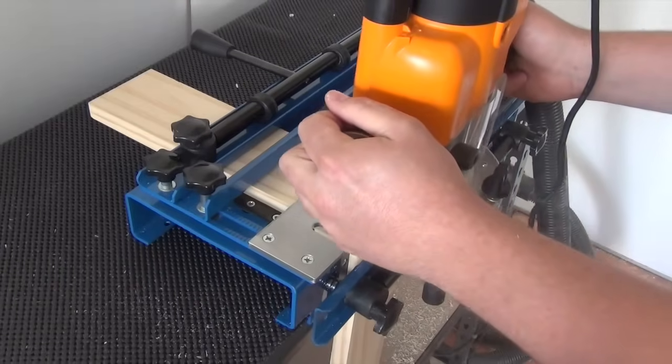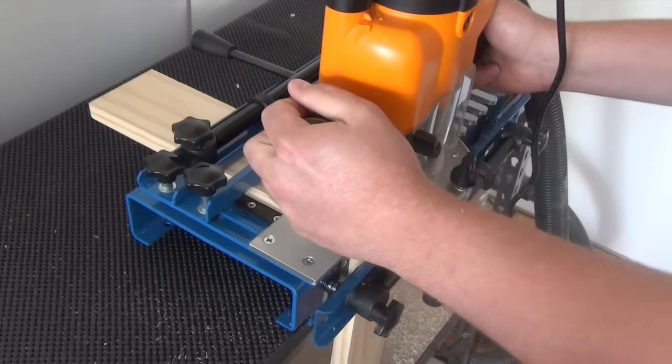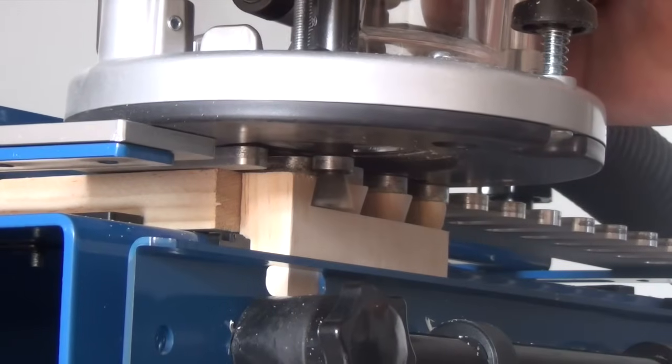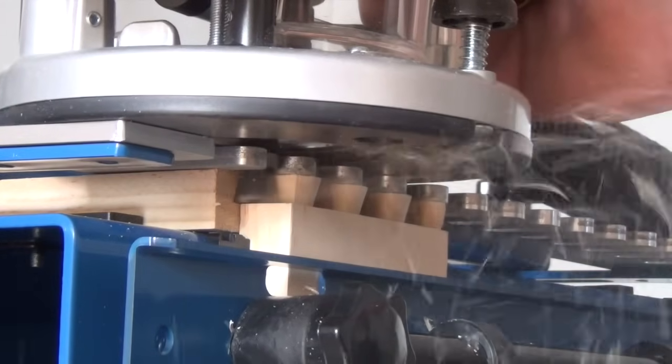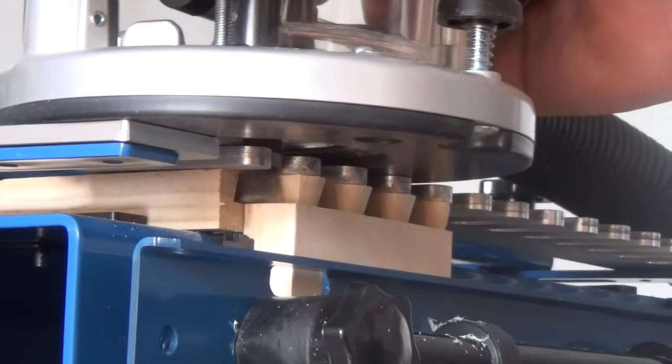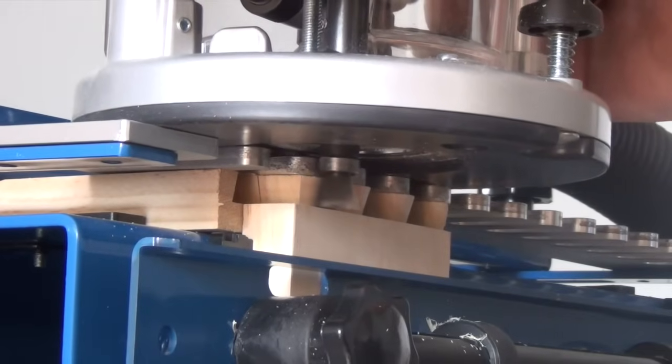Always run the router from right to left on your cuts. This stops the router from pulling away on your hands, allowing greater control and a better cut on the workpiece. When you've run all the way from right to left, run the router back from left to right again to clean up the cut.